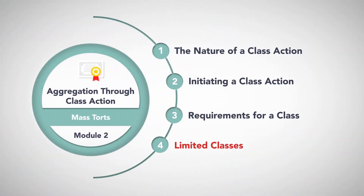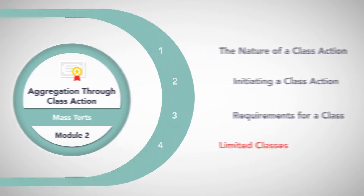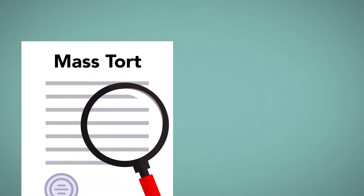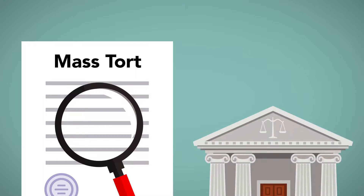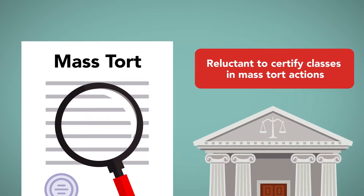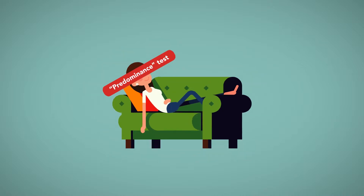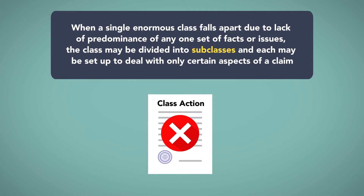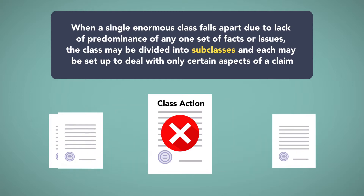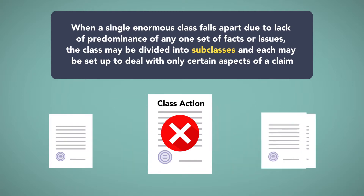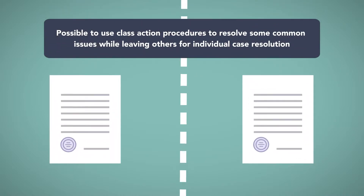Limited classes. After these two decisions, it appeared mass tort classes would have difficulty surviving appellate review, and courts became very reluctant to certify classes in mass tort actions. However, there is another part of the class action procedure that courts have begun to use to relax the strict predominance requirement. When a single enormous class falls apart due to lack of predominance in only one set of facts or issues, the class may be divided into subclasses, each set up to deal with only certain aspects of a claim. Dividing the classes makes it possible to use class action procedures to resolve some common issues, while leaving others for individual case resolution.